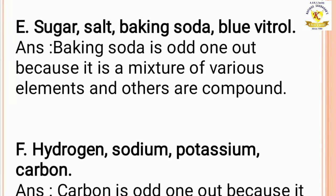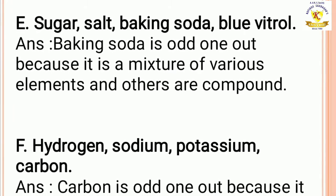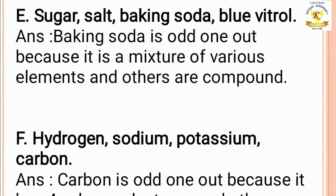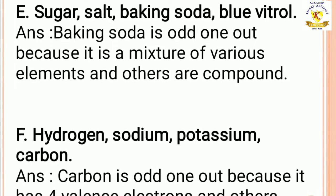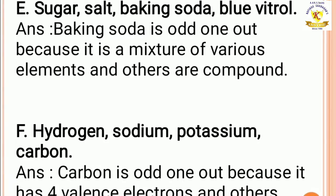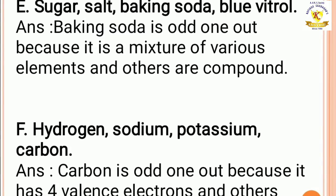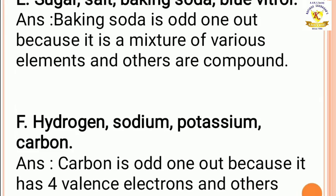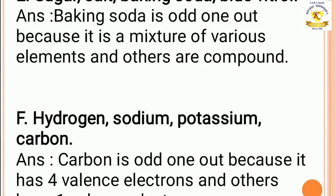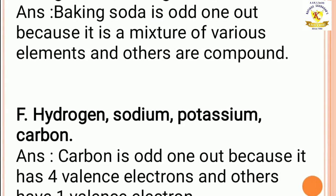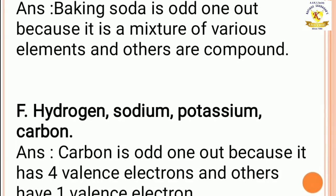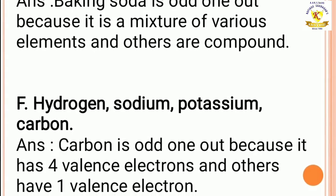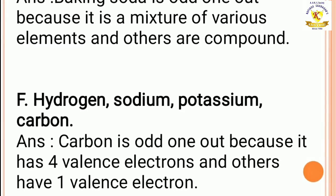Sugar, salt, baking soda, blue vitriol. The answer is baking soda is the odd one out because it is a mixture of various elements and the others are compounds. Hydrogen, sodium, potassium, carbon — carbon is the odd one out because it has 4 valence electrons and the others have 1 valence electron.